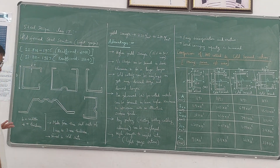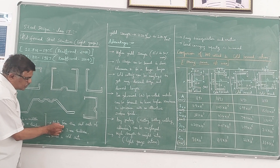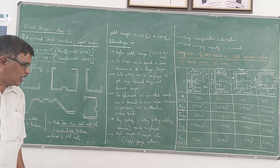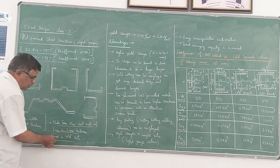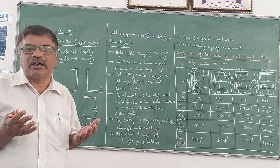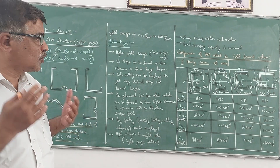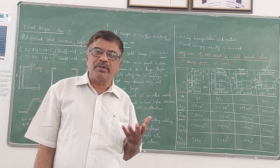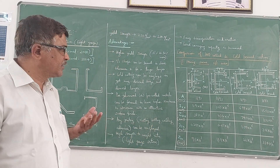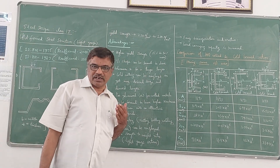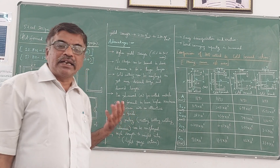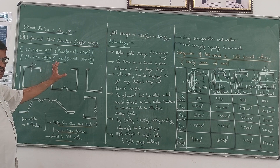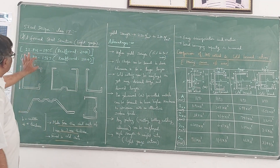Cold form steel structures are made from thin steel sheets of 1 to 3 mm thickness and are formed in the cold state, which is the opposite of hot formed or hot rolled steel sections. We learned how to design steel structures using IS-MW, IS-LV, or IS-XV sections — those are all hot rolled sections and use the IS-800 codebook. For cold form steel structures, we refer to these two codes instead.